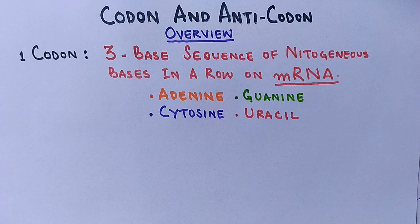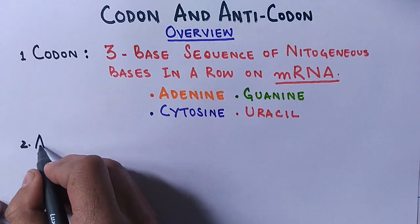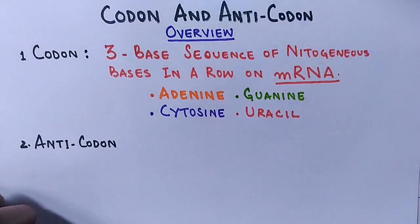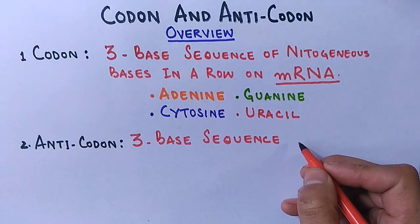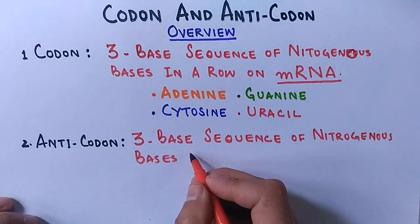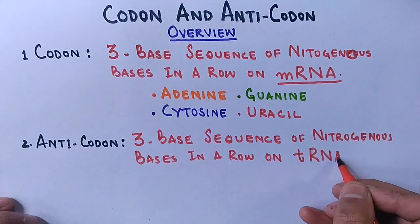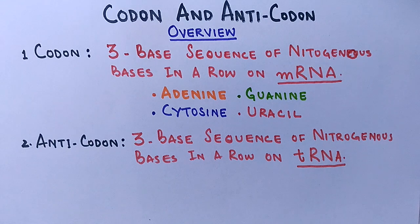Similarly, an anticodon is also a three-base sequence of nitrogenous bases, but it is located on tRNA at a specific region called the anticodon loop. It must be noted that the anticodon is present only at the anticodon loop and nowhere else in the tRNA molecule.